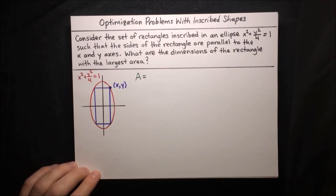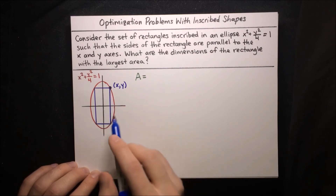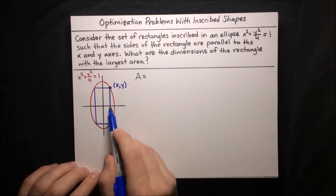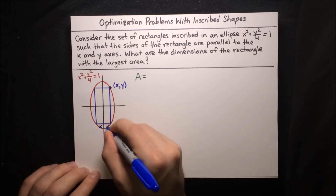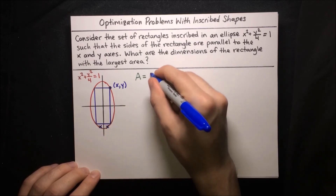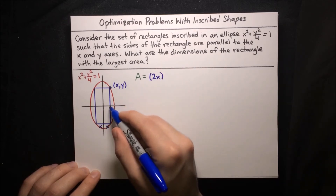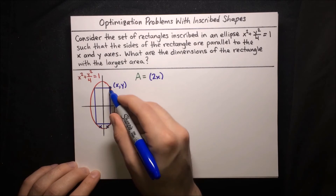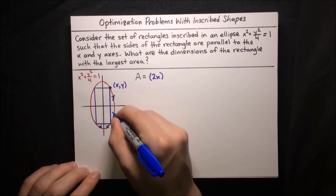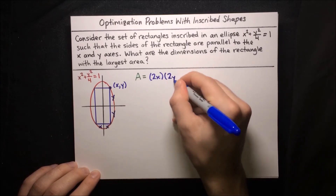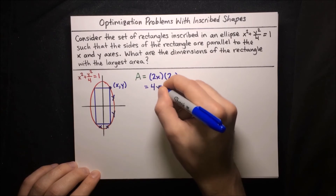The first thing we want to do is write our area function, because that's what we want to maximize. Area equals base times height for this rectangle. If the distance from the origin to the right side of the rectangle is x, then the base consists of two of those distances, so base is 2x. And the height — the distance from the x-axis up to the top side of the rectangle is y, so height is 2y. That means area equals 4xy.